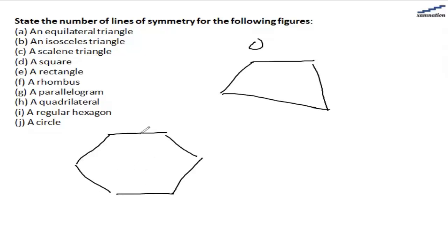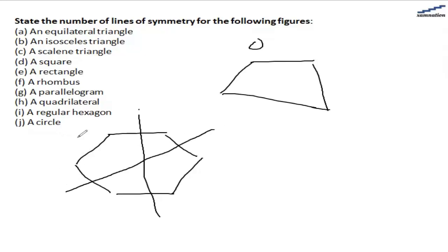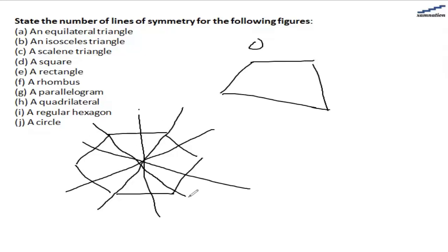For a regular hexagon, we have six equal sides. So we can divide this object like this, like this, like this, also like this, also like this, and also like this. So, there are six lines of symmetry in the hexagon.